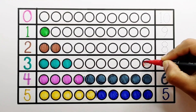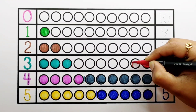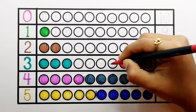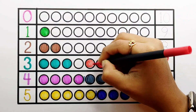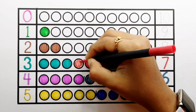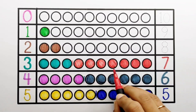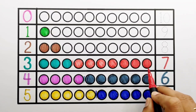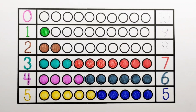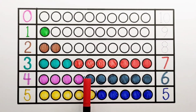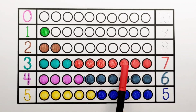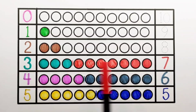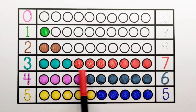Number 7 — 1, 2, 3, 4, 5, 6, 7 — 7 balls. 3 plus 7 makes 10: 1, 2, 3, 4, 5, 6, 7, 8, 9, 10. 3 plus 7 equals 10.